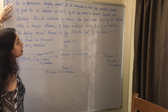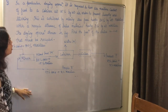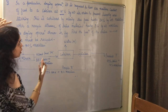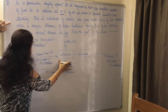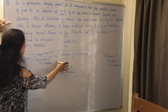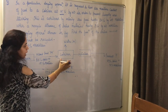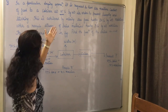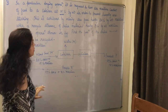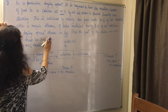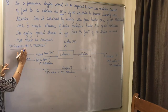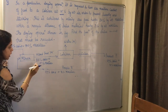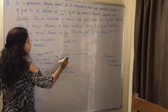In this particular drying operation, it is required to have the moisture content of feed to a calciner at 15% by weight, in order to prevent lumping and sticking. So only 15% by weight moisture is allowed to enter into the calciner. This is achieved by mixing the feed — which has 30% by weight moisture and 70% solid — with a recycle stream.